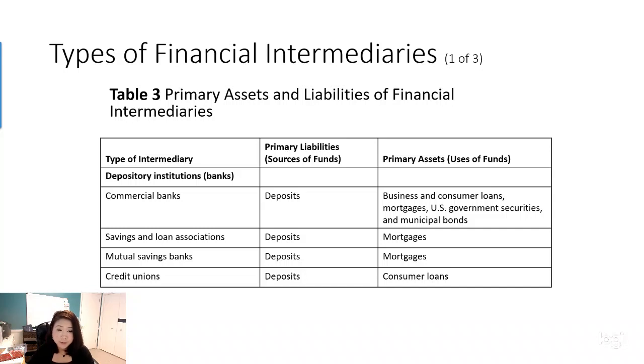In this video, we're going to look at different types of financial intermediaries. Generally speaking, we have three different kinds. The first kind we call depository institutions, such as the commercial bank.